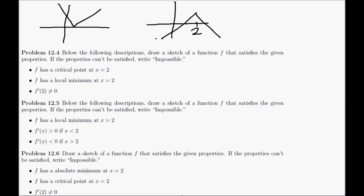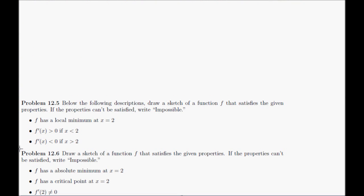There's an absolute maximum at x equals 2, there is a critical point at 2, but the derivative is undefined. So that would be fine for 12.6. So there's 12.4 and 12.6. Let's now talk about 12.5.